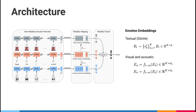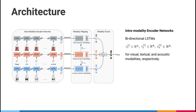Here is the architecture of our model. For the emotion embeddings, for text we have K embeddings extracted from the pre-trained GloVe. For the visual and acoustic modalities, with our two mapping functions we can transform ET to the other vector spaces. For each modality, there is a sequence of data. To extract a single vector representation of each modality, we use a bidirectional LSTM. The output vector at the last time step is seen as the representation of the whole sequence. For each sequence, we get RV, RT, and RA for the visual, textual, and acoustic modalities respectively.